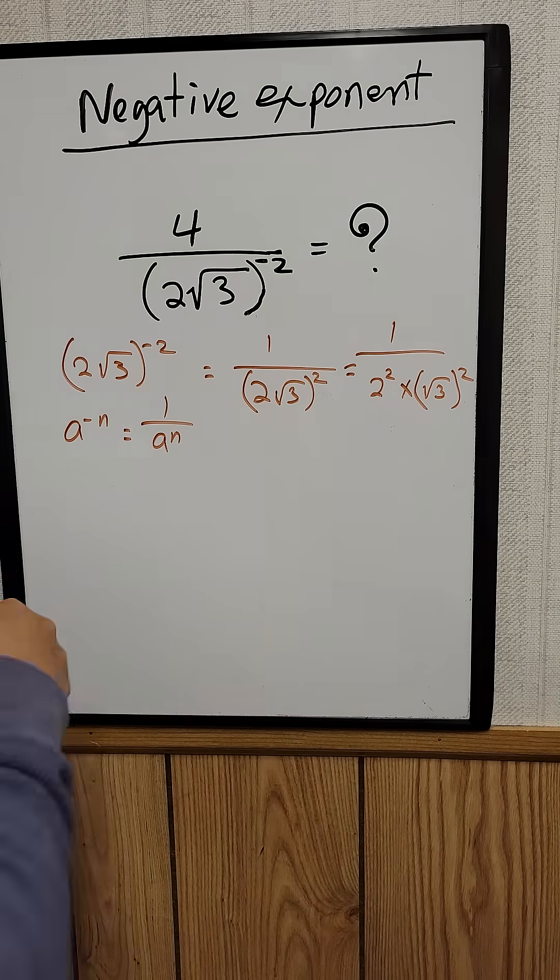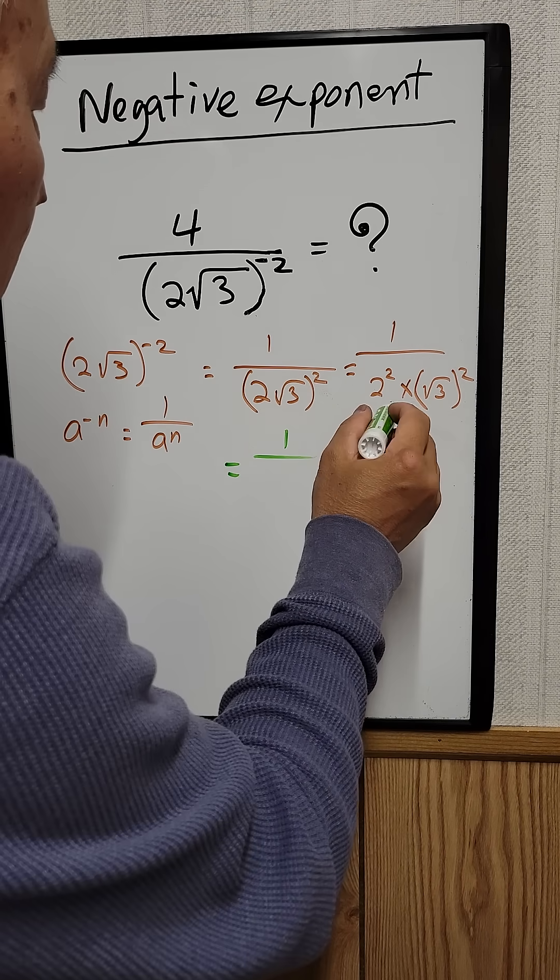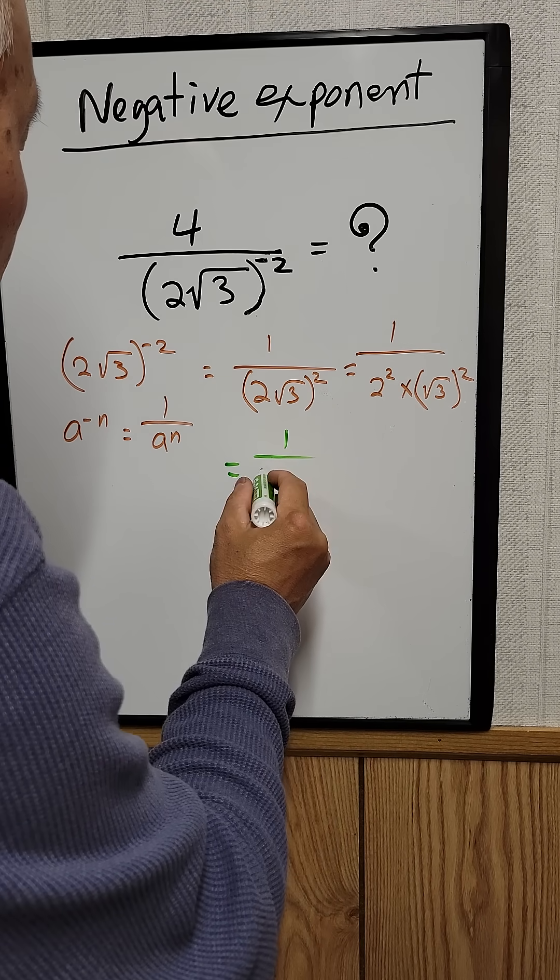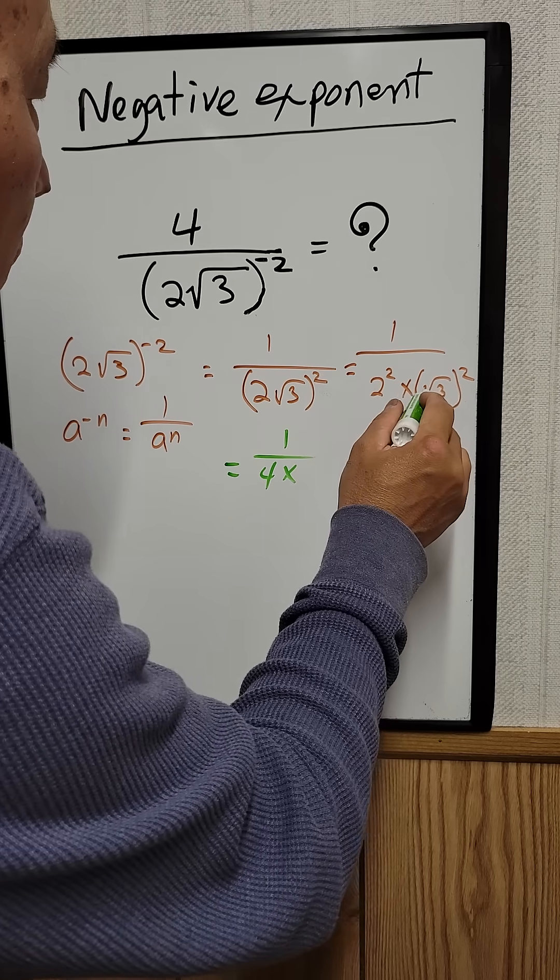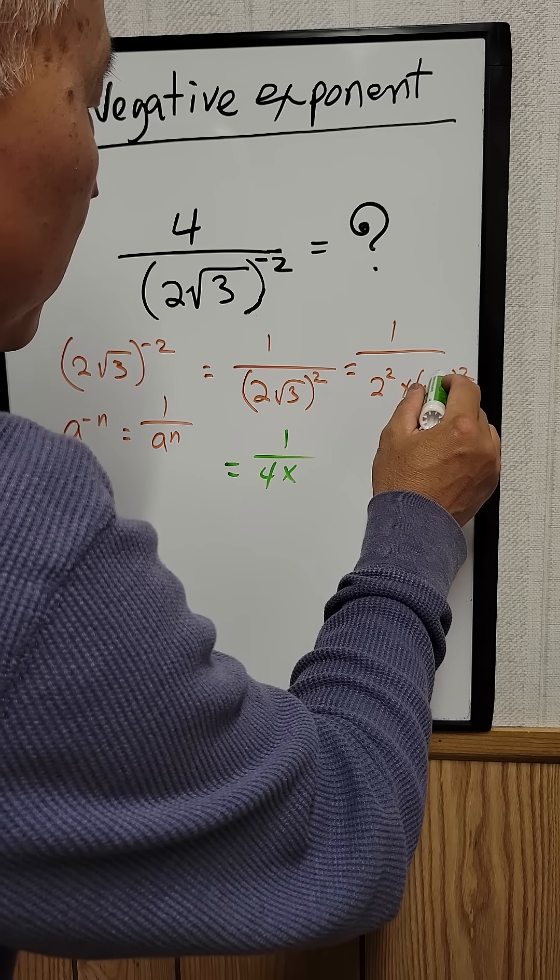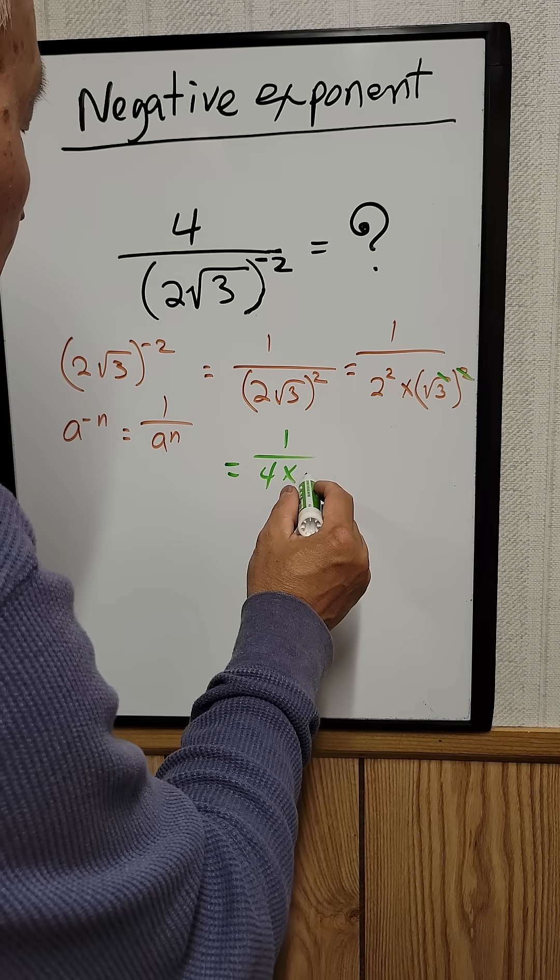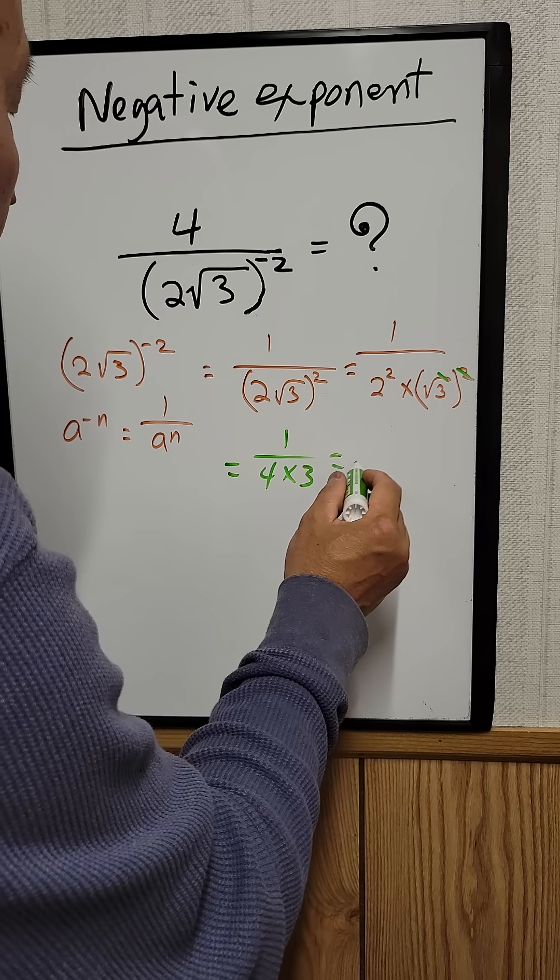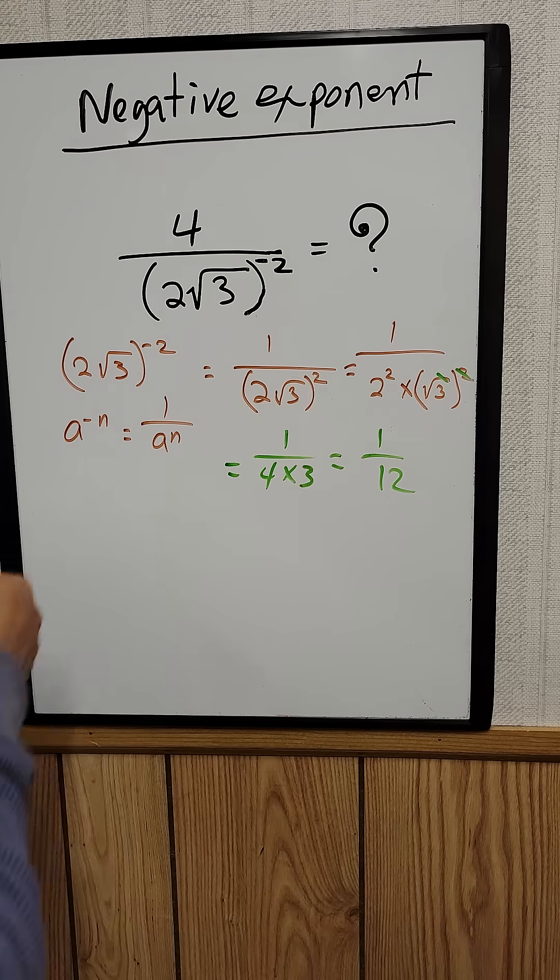So that's equal to 1 over, 2 squared is 4 times the square root of 3 squared. The square and the square root cancel each other out, leaving just 3. So that's 1 over 12. Now we can put this back into the problem.